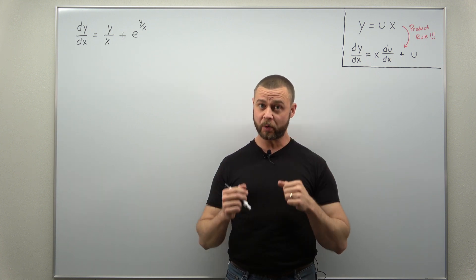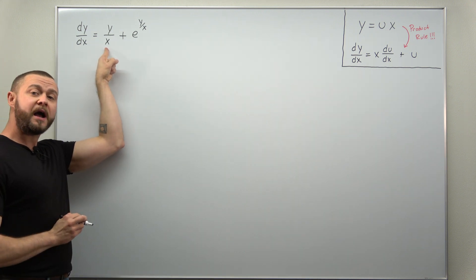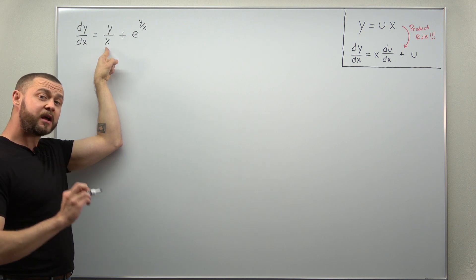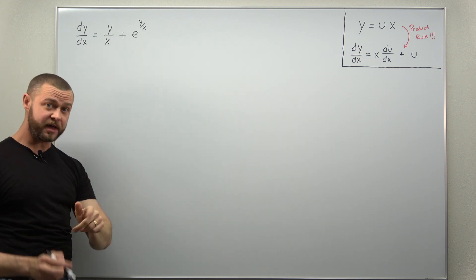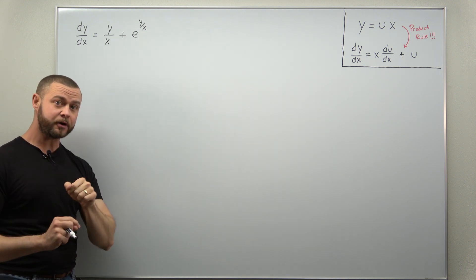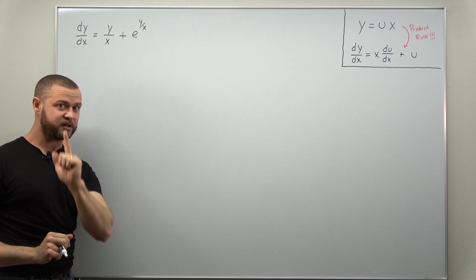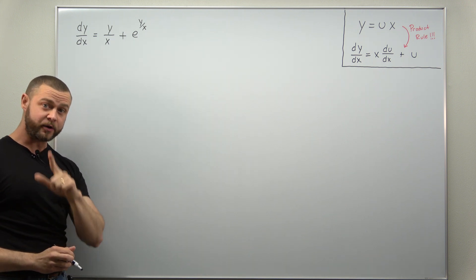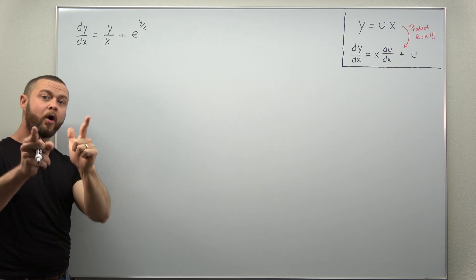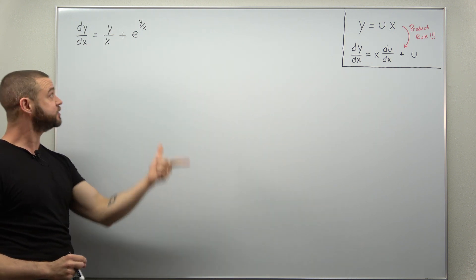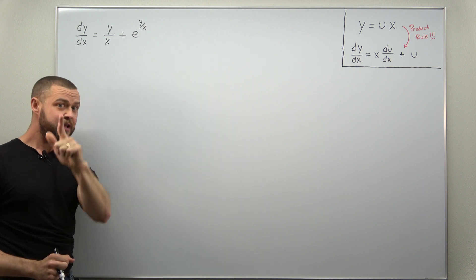Let's first point out why this equation is homogeneous. We have the term y divided by x — informally we can consider that to be a degree zero term. We also have e to the y over x, another degree zero term, so all terms in the differential equation are informally degree zero. The other way to identify a homogeneous equation is if the right-hand side only depends on the ratio y over x, and we see that here: y over x and e to the y over x. So this is homogeneous.